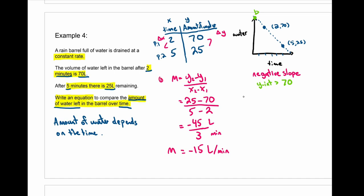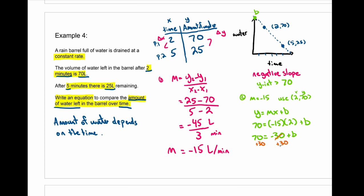So that was our first step — m = -15. Our second step is the y-intercept. We know m = -15 and we're going to use the point (2, 70) as our x and y. Using the general equation y = mx + b and plugging in all values: 70 = -15 × 2 + b. Negative 15 times 2 is -30, so 70 = -30 + b. I want to cancel out the -30 by adding 30 to both sides, and I'm left with b = 100.